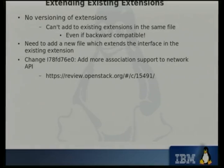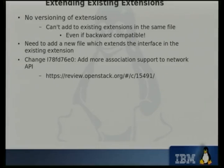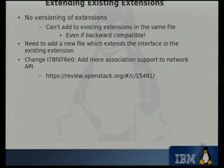There is one gotcha with creating new extensions — you can't add to existing extensions already in Nova in the same file. There's no versioning of extensions currently in Nova, so there's no way for a user to tell what functionality exists except by listing what extensions are supported. So if you want to add new functionality, even backwards-compatible functionality, you need to create a new file — a new extension — and extend it. The code required to do that can get a bit trickier, but there's an example patch available if you want to see how to do it. Hopefully we'll have versioning for Nova extensions soon.